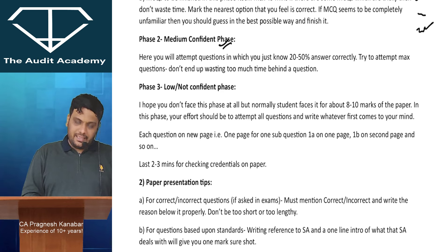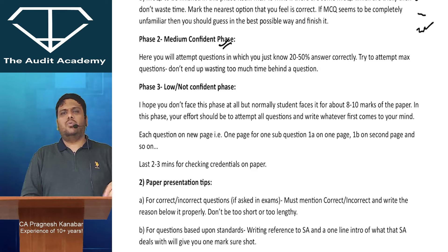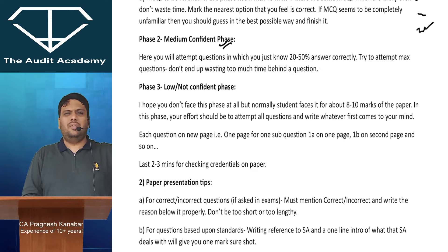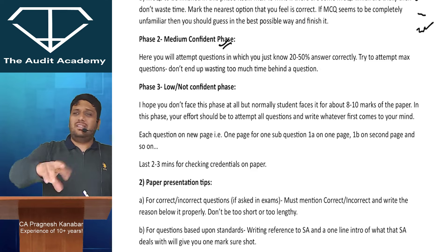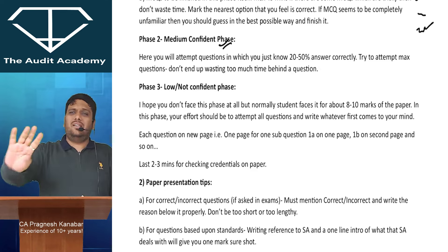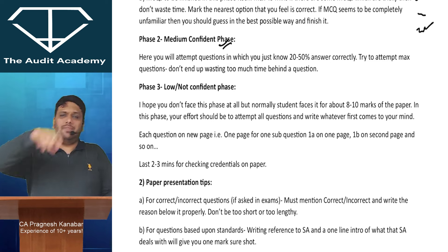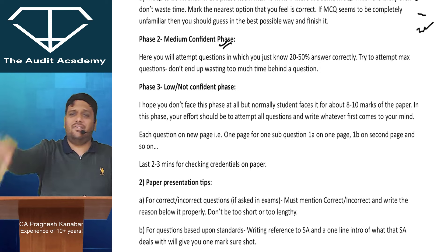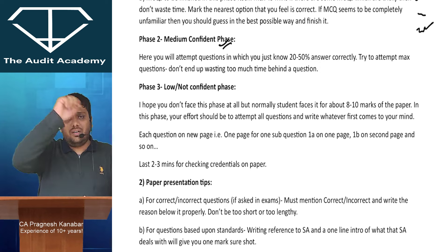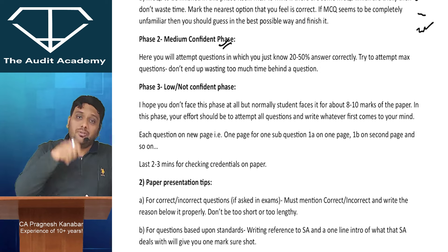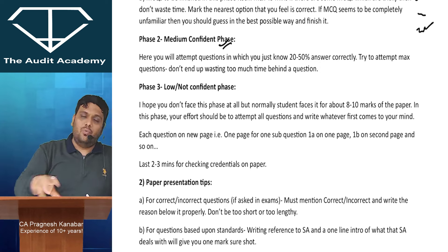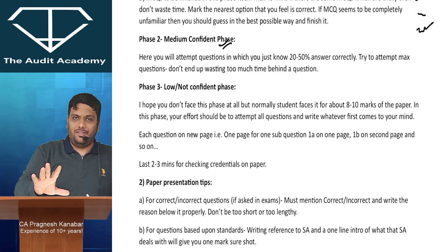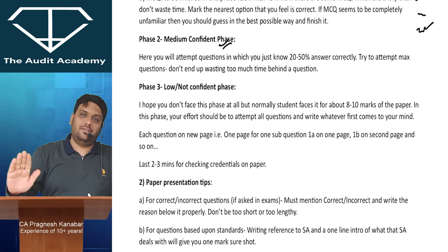I hope you don't face the blank phase, but normally on average for about 8 to 10 marks everyone will face this. In that case, please ensure that whatever comes to your mind, write 2-3 points. If it is related to standards, write common points like risk of material misstatement, professional judgment, experience, size, nature, complexity of the entity, materiality, AFRF - whatever comes to your mind. Just vomit it, write something.